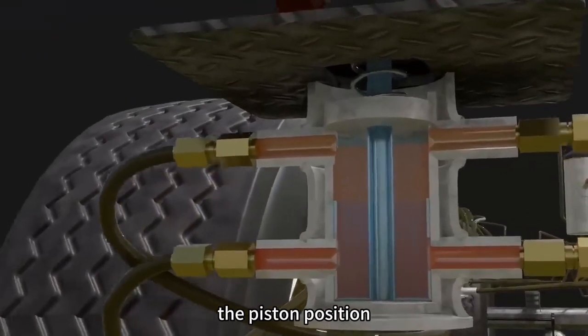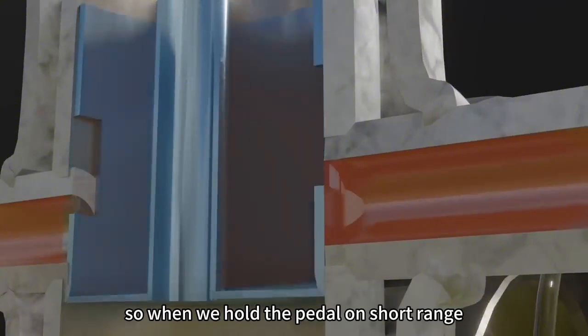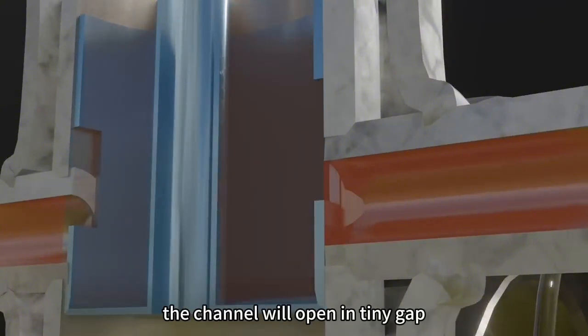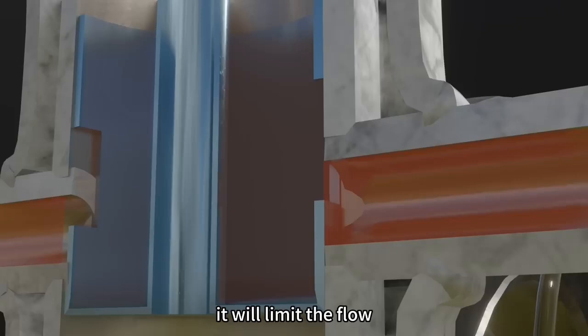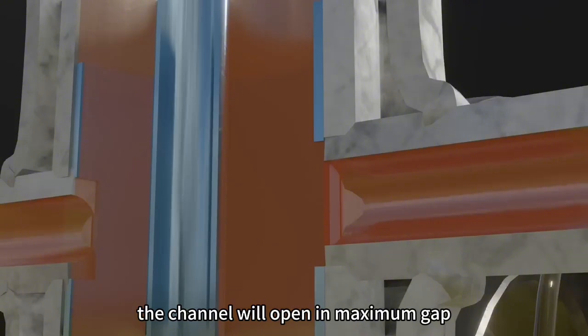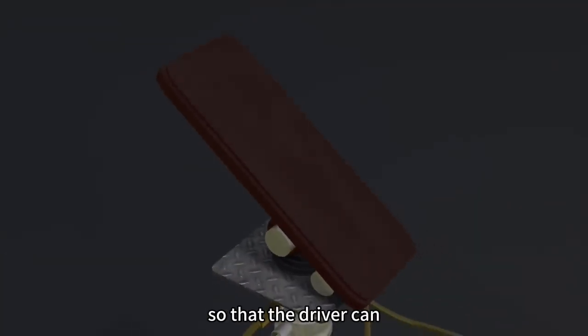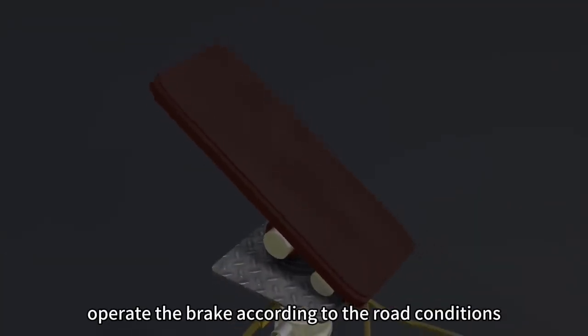The interesting thing is the piston position influences the flow of air to the outlet channel. When we hold the pedal on short range, the channel will open in tiny gap. It will limit the flow. But when we step on the pedal at full, the channel will open at maximum gap and the flow will be maximum. This mechanism aims to make the brake have variable power, so the driver can operate the brake according to the road conditions.